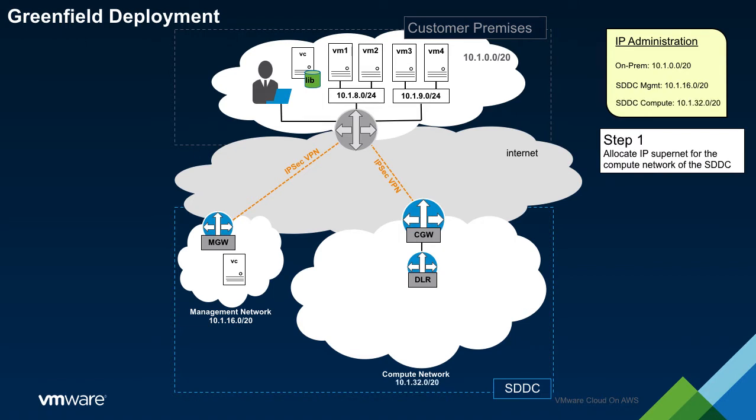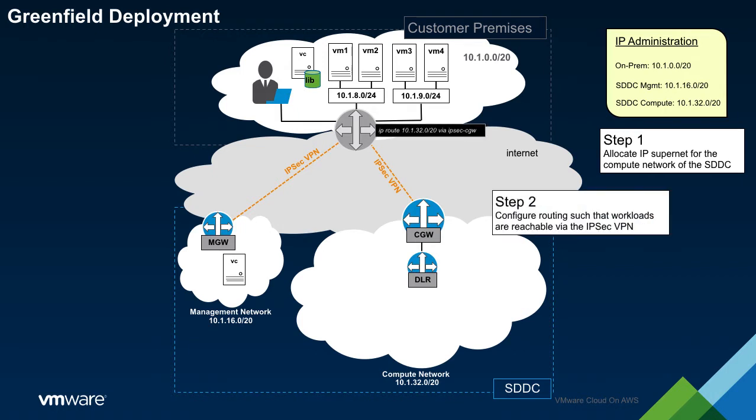Following IP allocation, the compute network should be made reachable from the on-prem network. This is accomplished using a static route within the on-prem router. Next, the security policy of the CGW must be adjusted to permit connectivity into the compute network.